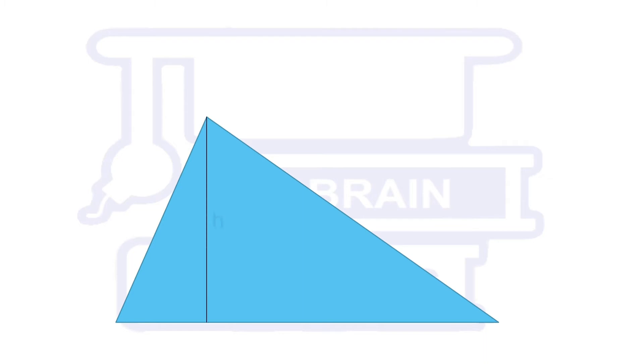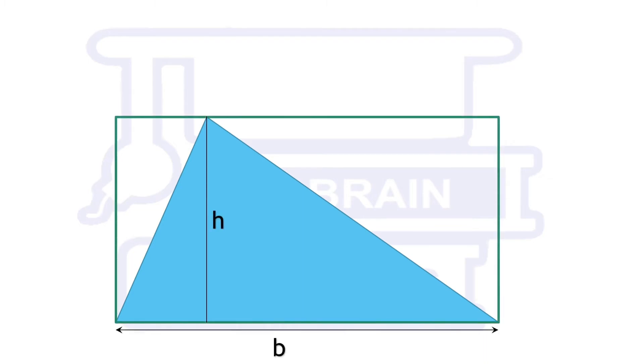Suppose a triangle of height H and base B is placed inside a rectangle of side B and H. Altitude of the triangle divides it into right-angled triangles.